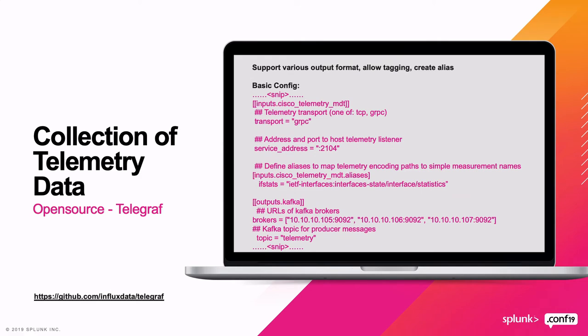Another tool we have is also open source, called Telegraf. Telegraf is a very popular tool supported by InfluxDB. Juniper also has an input plug-in running as part of Telegraf, so both Cisco and Juniper have one. It has two major parts: input configuration and output configuration. On the input, you define the transport protocol, the listening port, and you can do tagging or create aliases for your telemetry sensor paths. Since some sensor paths can be very long, you can create an alias to help with data parsing later.